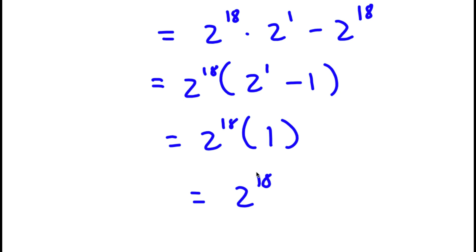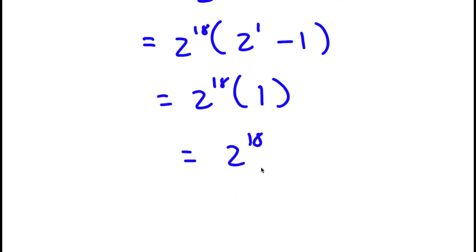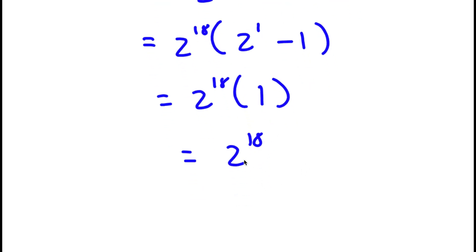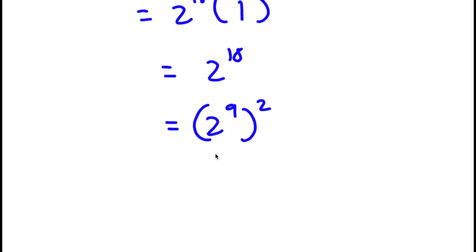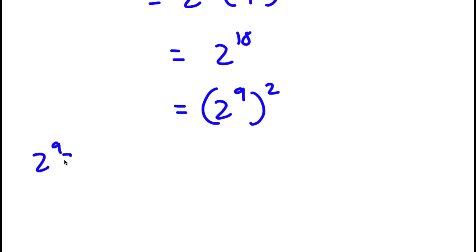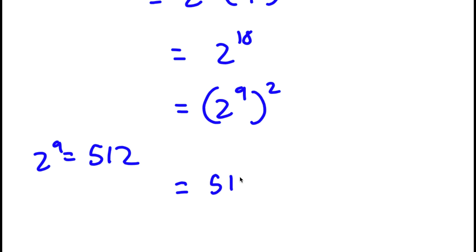Now I'm going to simplify this to get the exact value of 2 to the power of 18. So 2 to the power of 18 is the same thing as 2 to the power of 9 to the power of 2. And 2 to the power of 9, as most of you probably know, is 512. So this is the same thing as 512 to the power of 2.